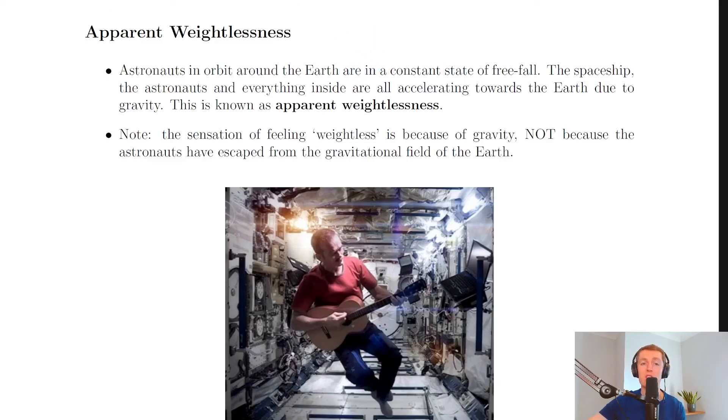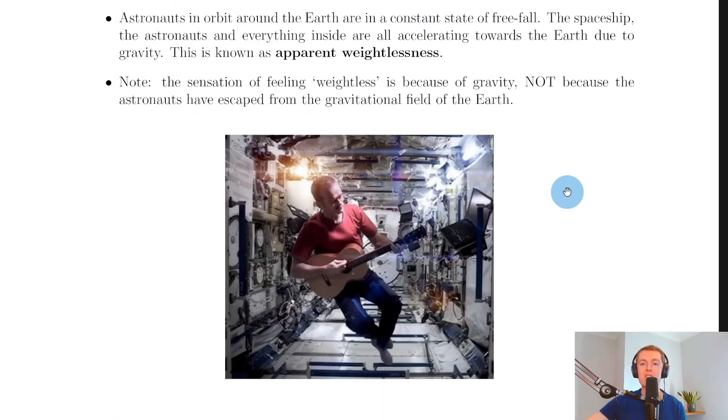Going back to the notes, this brings us to the last part of projectile motion: apparent weightlessness. Astronauts in orbit around the Earth are in a constant state of free fall. The spaceship, the astronauts, and everything inside are all accelerating towards the Earth due to gravity. This is known as apparent weightlessness.